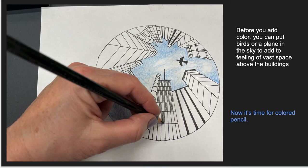And then you can add color. But before you get into that, notice that I put an airplane up there. That's to add a sense of vast space. So airplane, birds, a blimp, anything you think you'd see up in the sky, you can draw in. And then I made it black so it was a focal point. It really jumps out to the viewer.